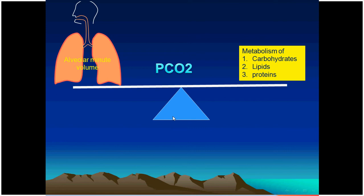Carbon dioxide is produced by metabolism of carbohydrates, lipids, and proteins. It flows from cells to extracellular fluid to blood, and then is eliminated by the lungs. In a steady state, CO₂ production equals CO₂ elimination by alveolar ventilation, and PaCO₂ remains normal.